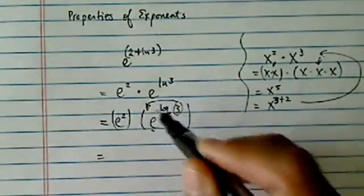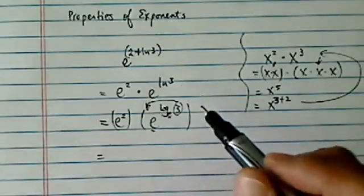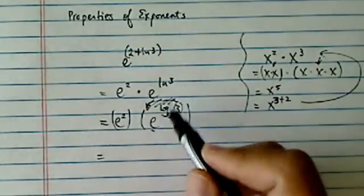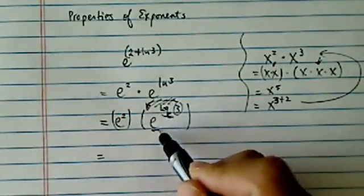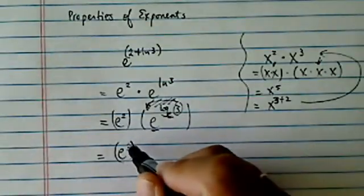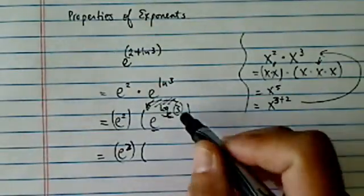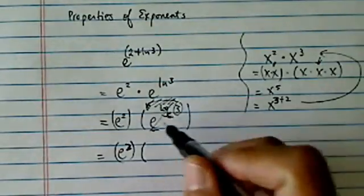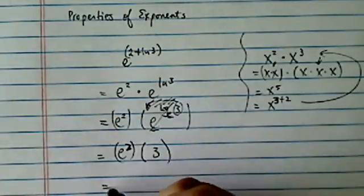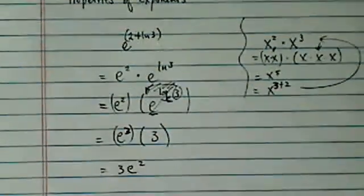Another thing you might think is 3 goes in the front — actually, don't think of it that way. When the base matches this base, just think of it as a cancellation of some sort. So 3 comes down, and it's 3e squared.